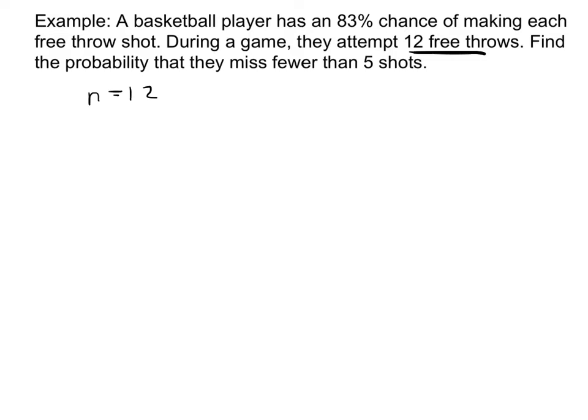This is where we need to be careful. What does it mean to miss fewer than 5? And I actually recommend you guys write this down. Write down the probability to miss fewer than 5 shots. So literally, what does that mean? That's the probability that they will miss how many? 0, or 1, or 2, or 3, or 4. Not 5, because they would need to miss fewer than 5 shots.